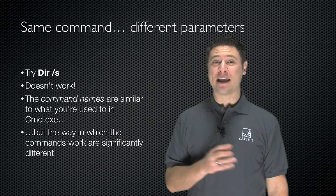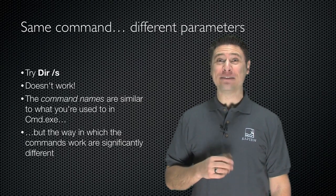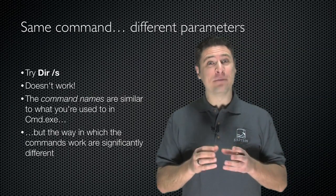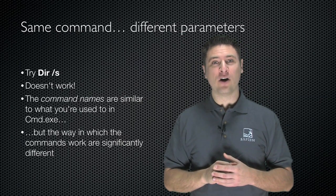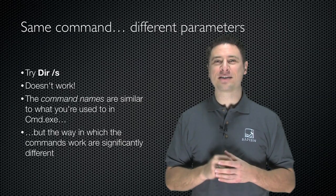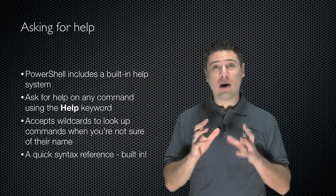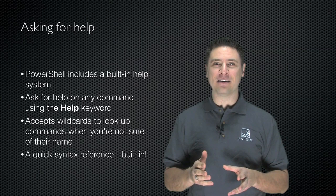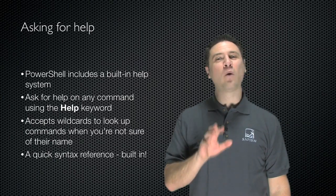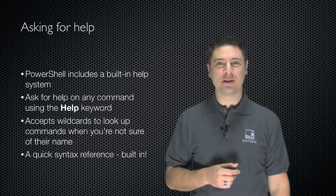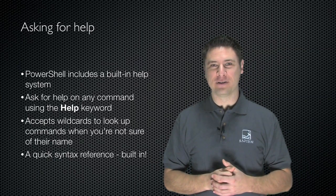If you try running dir /s in command.exe, that would give you a directory listing including sub-directories. However, in Windows PowerShell it gives you an error, because the command name dir is similar to the one in command.exe, but the way it works and the parameters it uses are different. You're going to have to learn to do things slightly differently, and one way to do that is to just ask for help. Windows PowerShell includes a powerful built-in help system, and it gives you help on any command just by using the help keyword. Type help, the name of the command, and you get help. It even accepts wildcards so you can look up commands where you don't know their full name, and the complete syntax is covered.